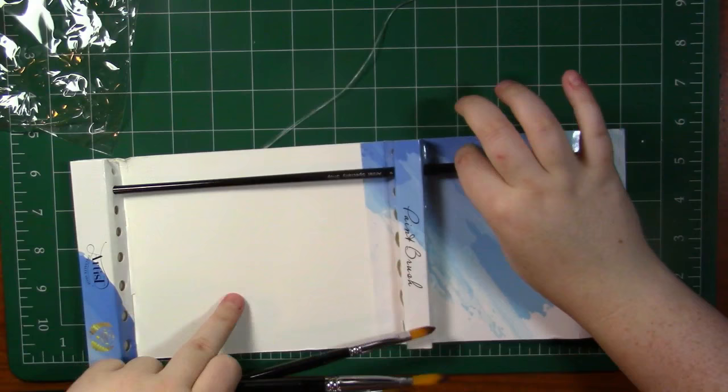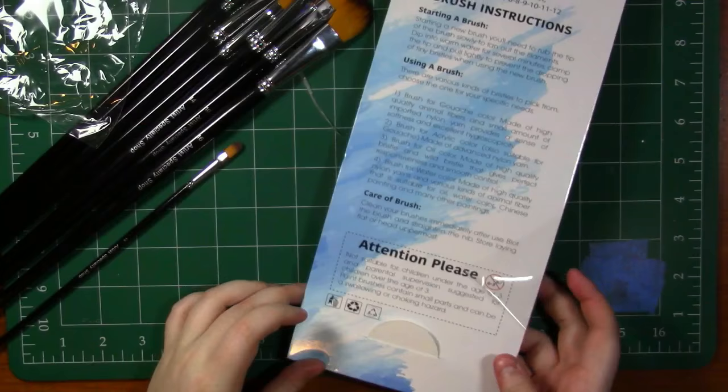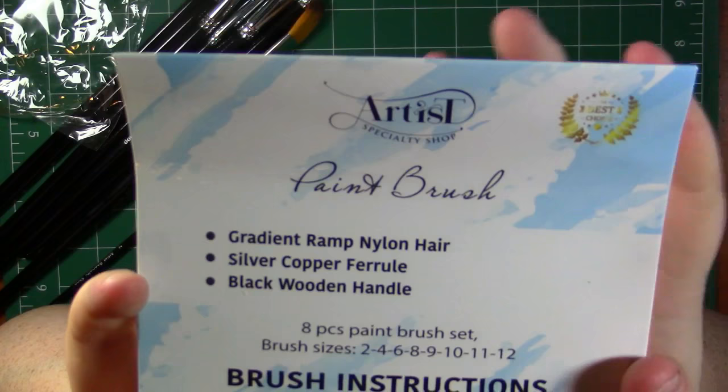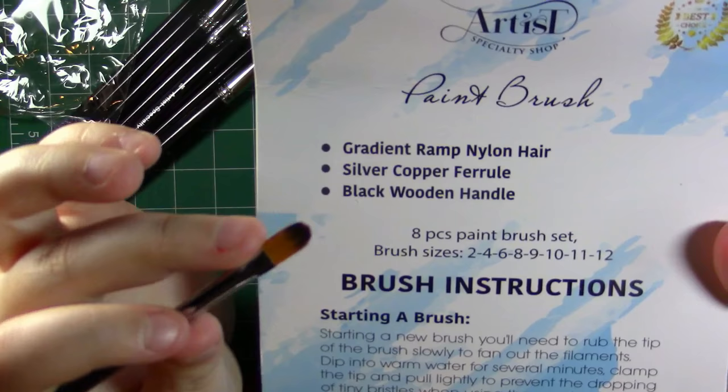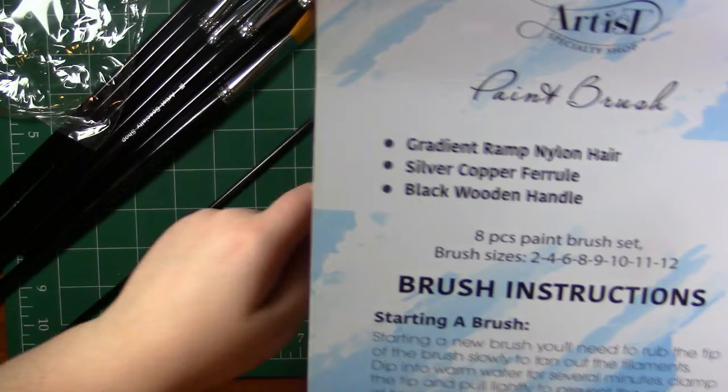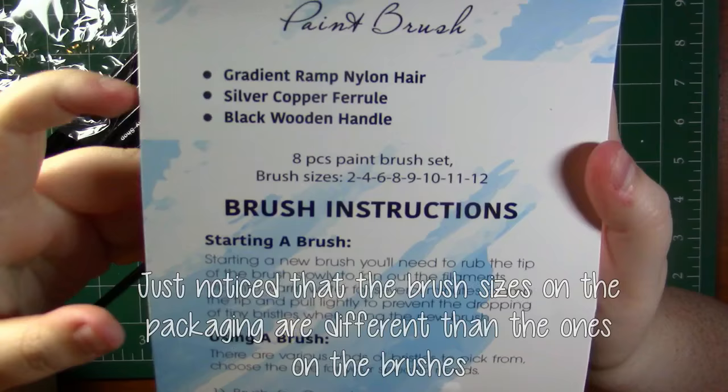All right so I'm going to set these brushes over here and we're going to actually look at the packaging. So on the back it says the brand name and then they are a gradient ramp nylon hair which basically means the bristles gradate and then they have nylon hair. It has a silver copper ferrule, so that's the very top part if you didn't know, and then a black wooden handle. There are eight pieces with the brush sizes that I already told you.